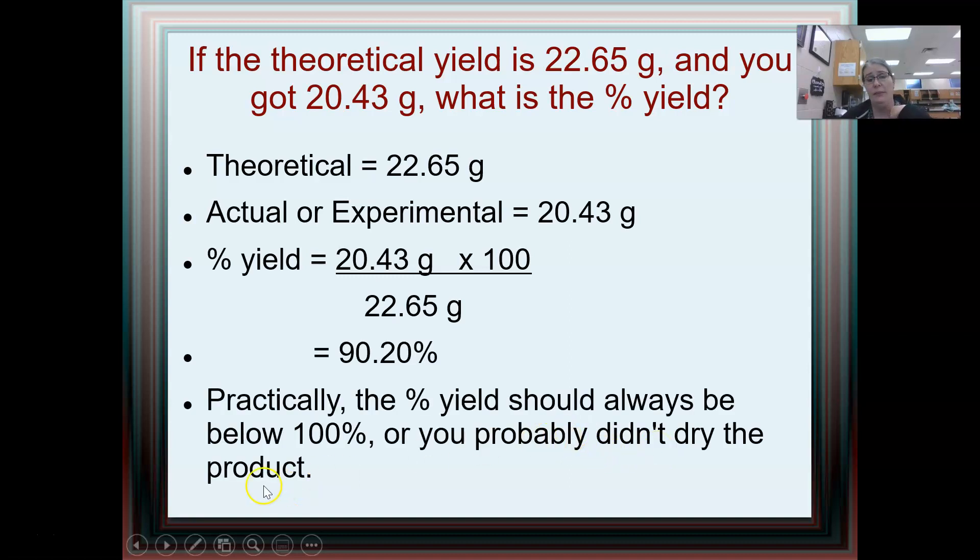Really, the percent yield should always be below 100% or else there's something wrong. You either maybe have water, you didn't dry the product like we talked about with our carbonate lab, or you might have something that is contaminating the product. Say you might have an excess reactant that's still present. So those are three types of stoichiometry problems that we should know how to do in AP chemistry. Simple stoichiometry with excess, limiting reactant stoichiometry, and percent yield.